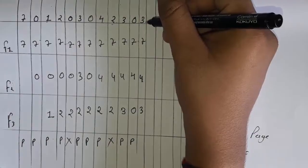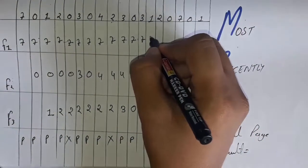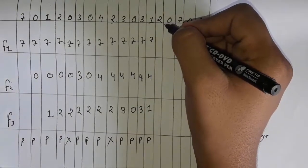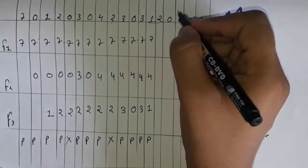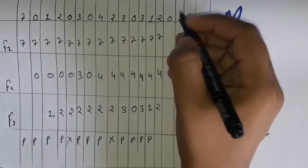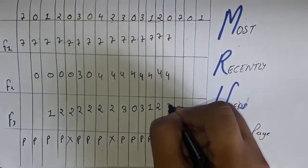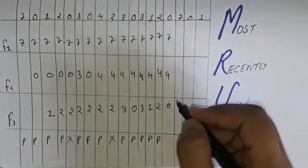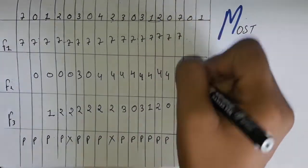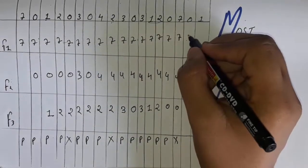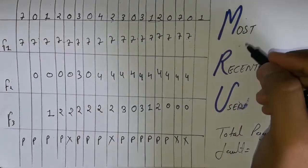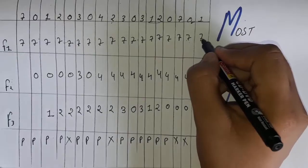The next process is 0. We have to replace 2 by 0 because 2 is our MRU. Write 7, 4, 0. There was a page replacement here, so write P. Now 7 arrives — 7 is already in our list, so write 7, 4, 0 with no page replacement. Page 0 is already in our list, so write 7, 4, 0. The last page is 1 — the Most Recently Used page is 0, so write 1 instead of 0, giving 7, 4, 1.